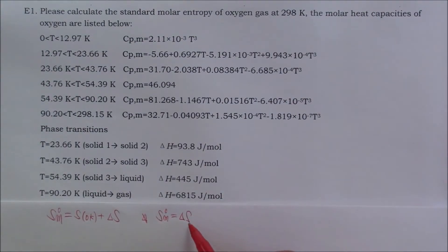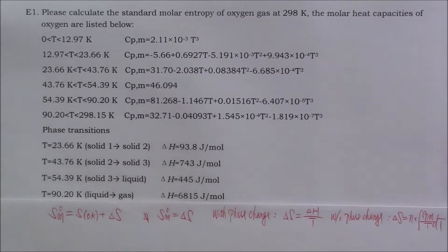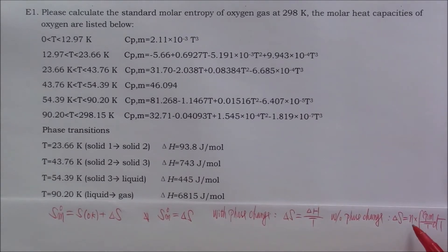To calculate the change of the entropy at constant pressure, we have two different kinds of basic calculation methods. One is without phase change, the other one is with phase change. Let me put them down. Remember, at the phase change temperature, the temperature does not change. To calculate the entropy change without phase change, it will be equal to the moles multiply the integration of CPM over T dT. Apparently, depends on the expression of CPM, we need to integrate differently.